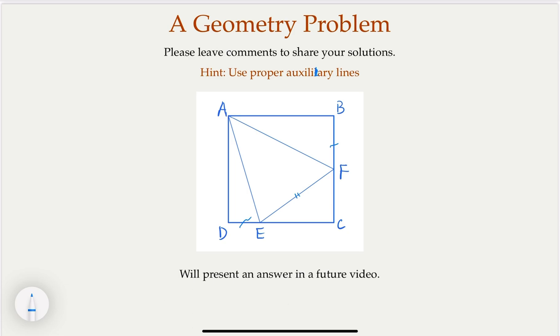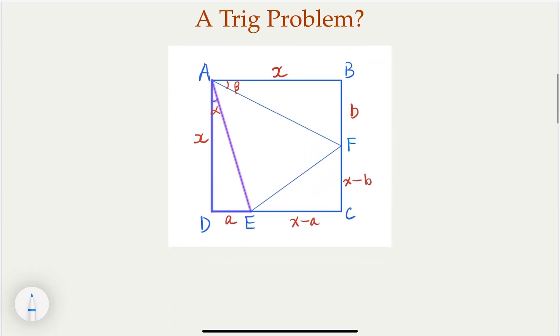Is it a trig problem? Let's mark the angle alpha beta here, and let's assume the square has a side length of x. Also, the DE segment length is a, BF is b, and so the remaining one would be x minus b, x minus a. We have the proper setup.